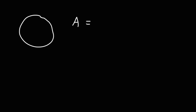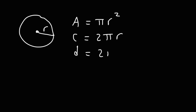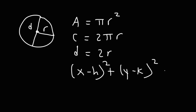When dealing with circles, the area is pi r squared and the circumference is 2 pi r. The radius is the distance between the center of the circle and any point on the circle. The diameter is twice the value of the radius. The equation of a circle is (x minus h) squared plus (y minus k) squared equals r squared. In that standard form, the center has coordinates (h, k) and r is the radius.